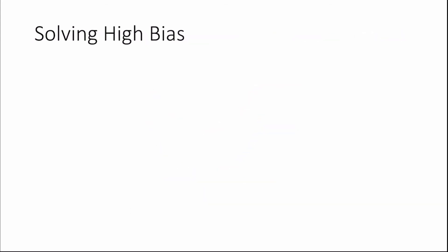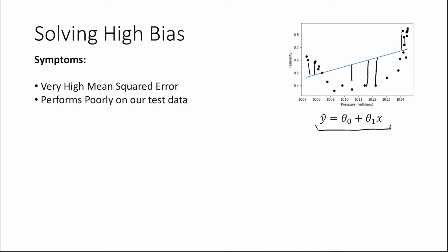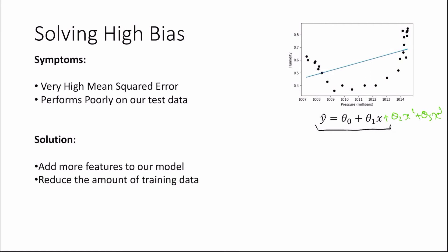Let's look at how we can solve high bias and high variance problems. Taking the example of the linear model with very high bias: symptoms of a high bias model include a very high mean squared error — meaning the average distance our points are from our model is large — and poor performance on test data. Ways to solve high bias include adding more features, for example adding theta 2 x squared and theta 3 x cubed to create a bowl-shaped relationship. We could also reduce the amount of training data, though it's always better to get as much data as possible.